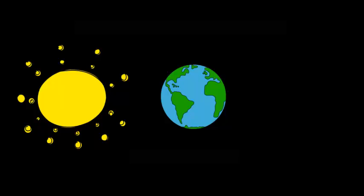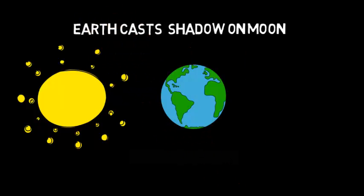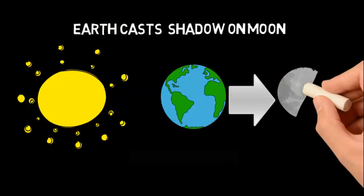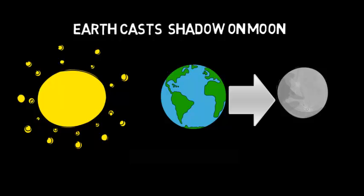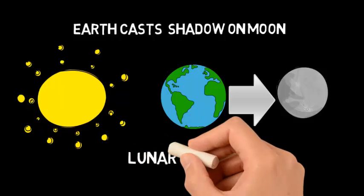There is another scenario. Here, the Sun's rays are falling on the Earth, and the Earth casts a shadow on the Moon. That is called a Lunar Eclipse.